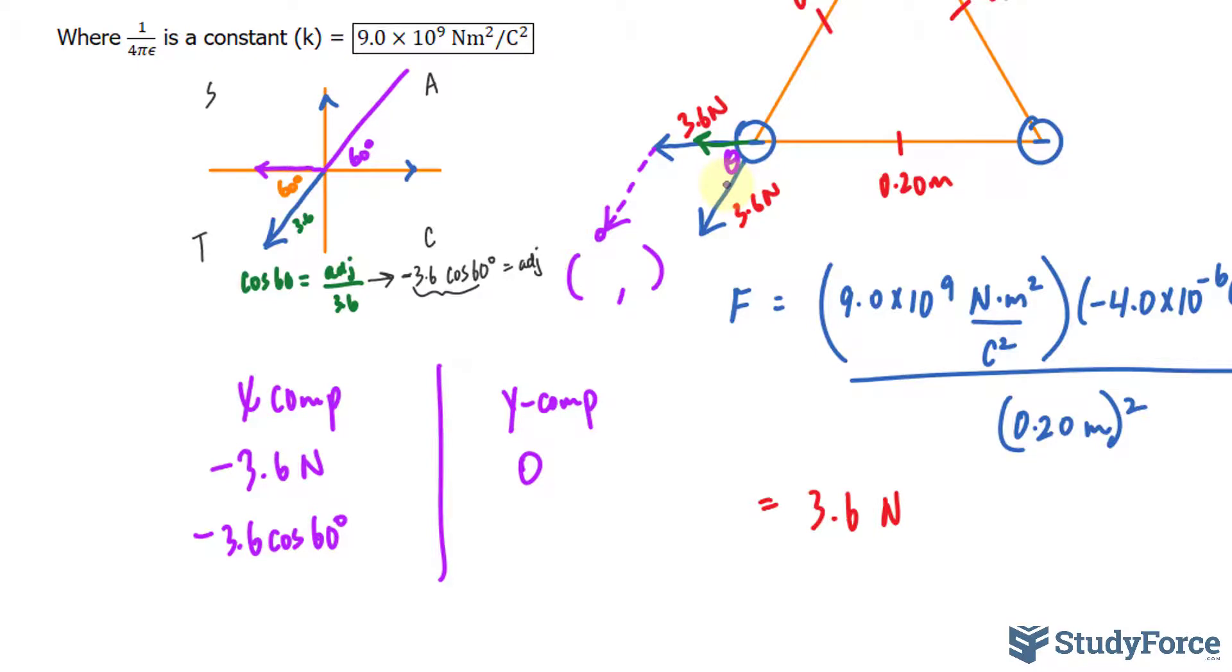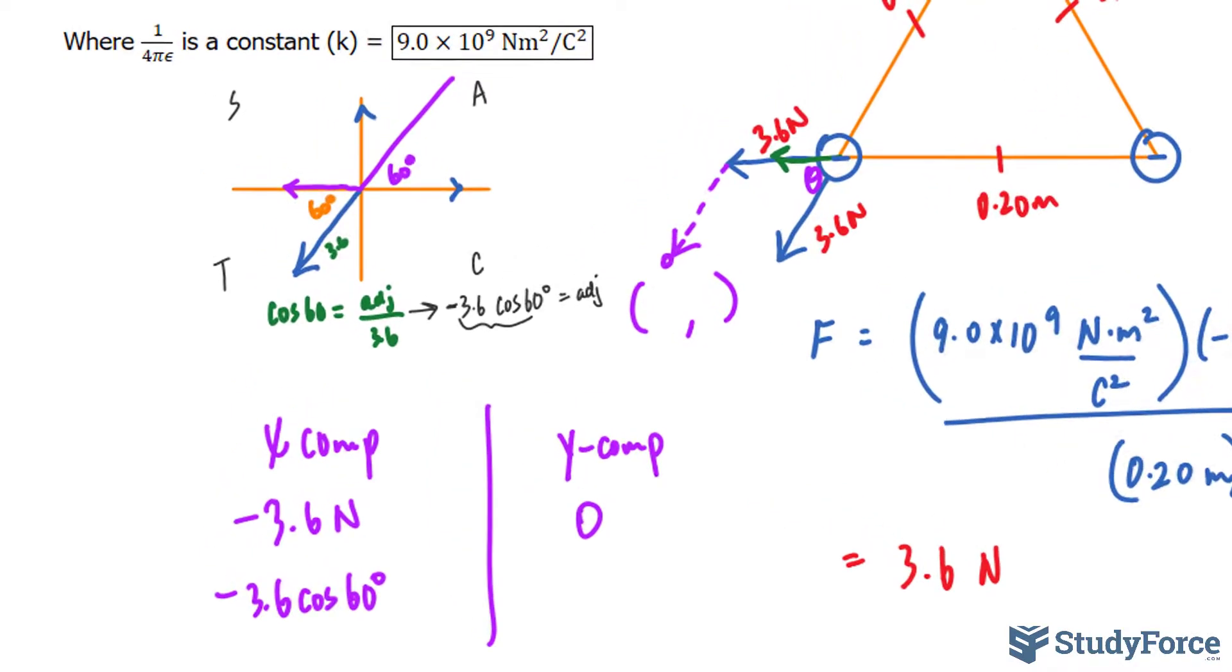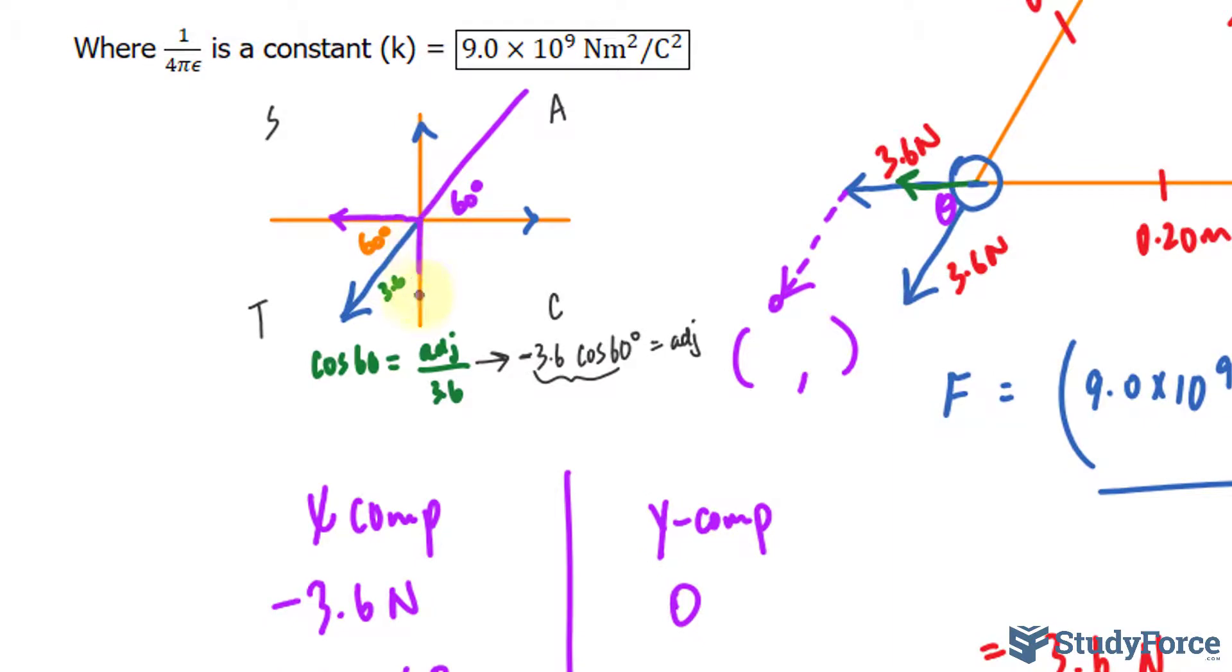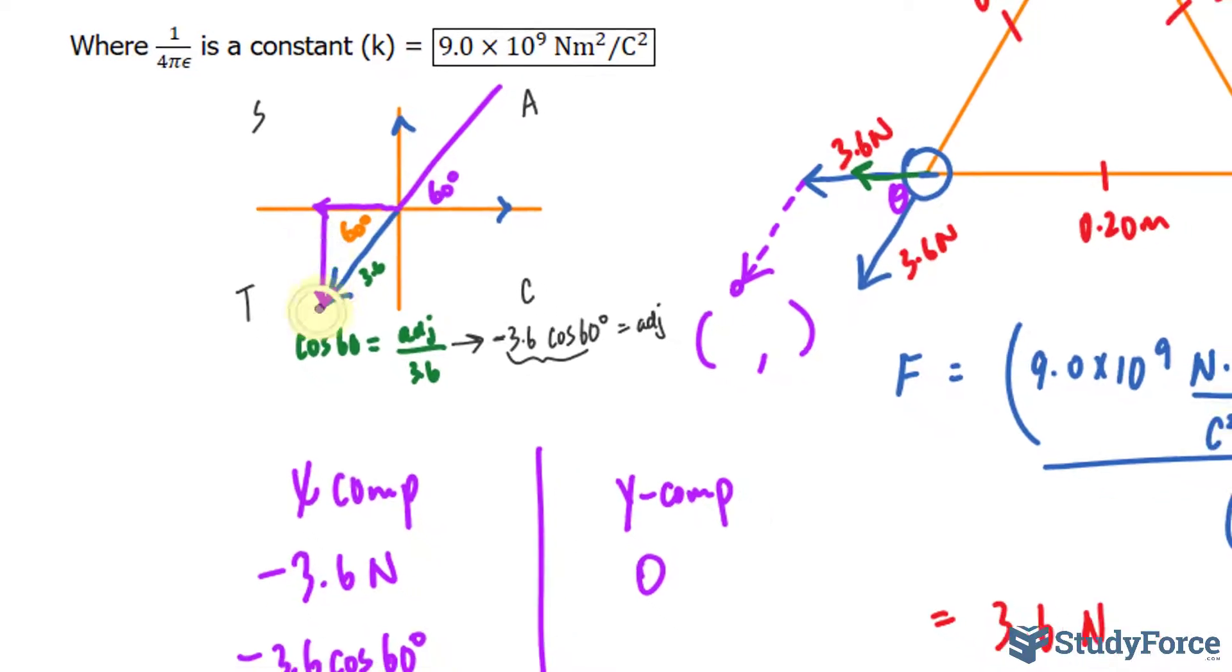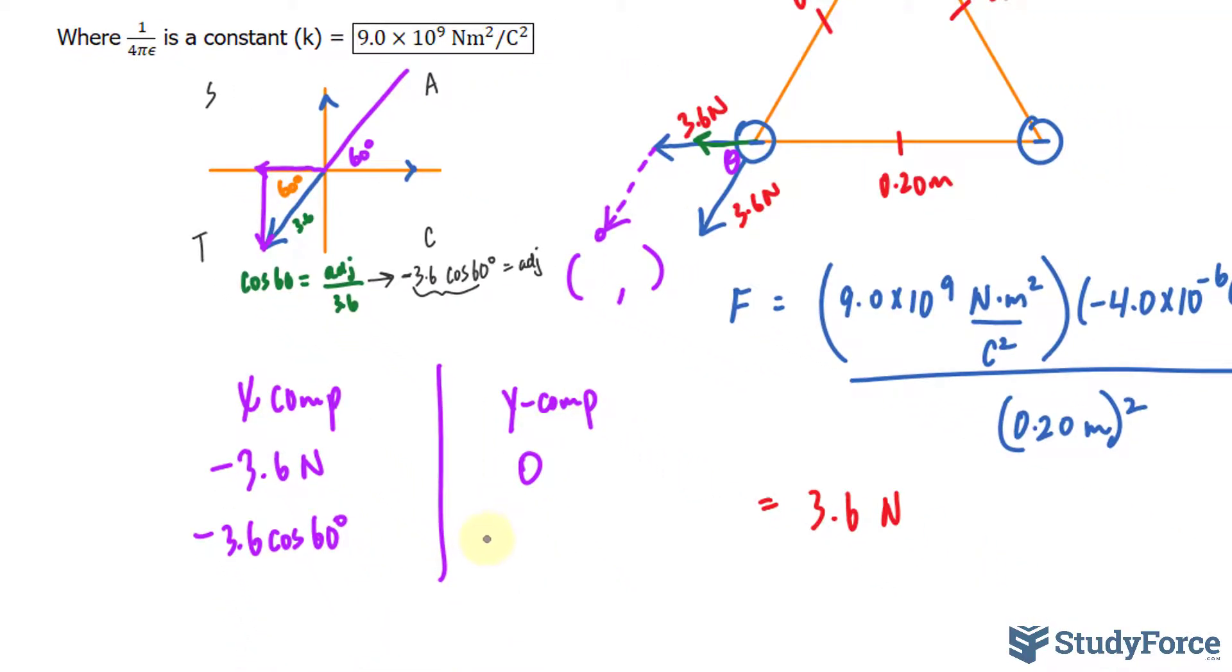Of course, we have to use sine this time since we are looking for the y component. The y component would be this thing. We can move that, just to give you a better visual, we can move that there and you can see why sine would work. Sine would work because now it is opposite and hypotenuse. So I'll write down, again, negative 3.6 sine 60 degrees. I put negative because only tangent can be positive here.